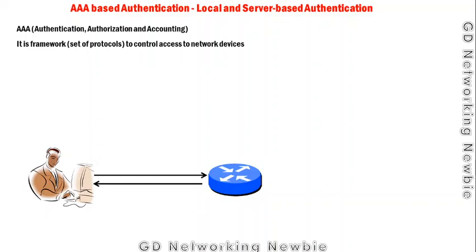AAA actually stands for Authentication, Authorization, and Accounting. This AAA is a framework — a set of protocols by which we control access to network devices. In our organization we can have multiple routers and multiple switches, so we want to control who can and cannot access our network, making our devices and networks secure.